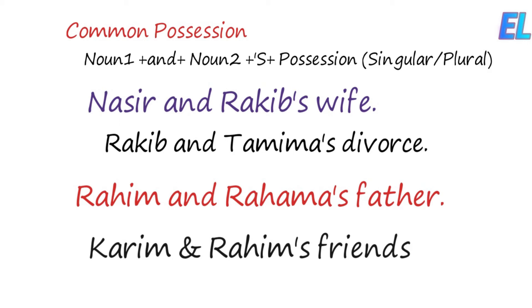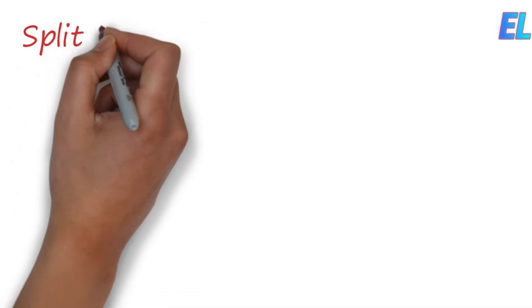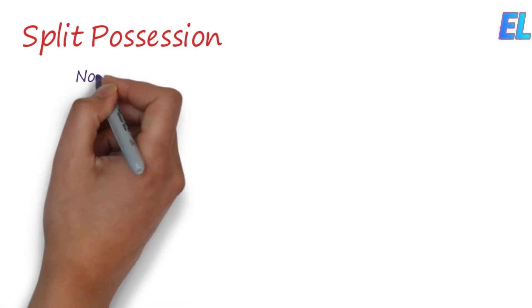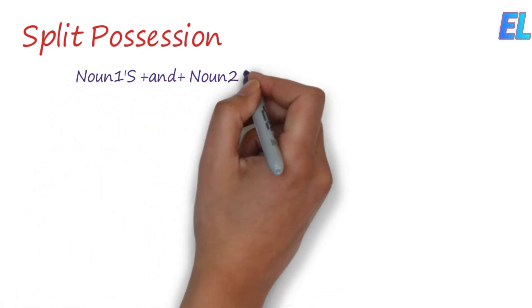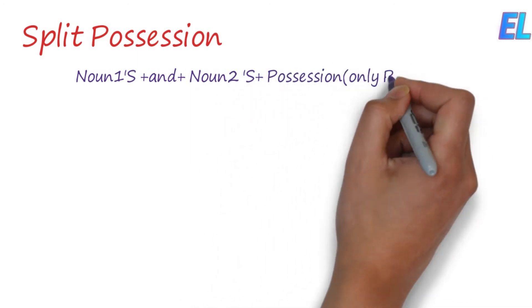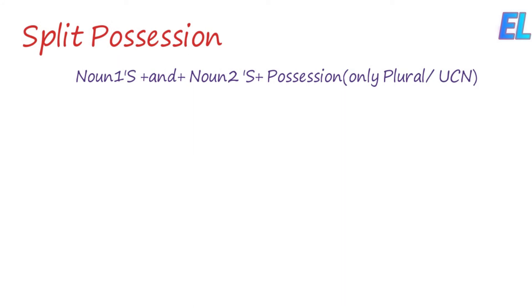If they are different persons, we call it a split position. Split position means Noun 1 apostrophe-S and Noun 2 apostrophe-S plus the possessed noun. This applies when there is a split position, a plural position, or an uncountable noun.